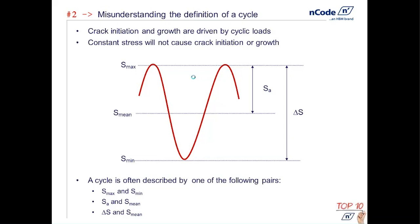What's really important is that we have described those peaks and valleys. We can describe that in a couple of different ways: we can describe it with a pair of stress max and stress min, we can describe it in terms of stress amplitude and the mean stress, or we can describe it in terms of the stress range and the mean stress. We need one of those three pairs to be able to do fatigue calculations on this particular stress cycle.